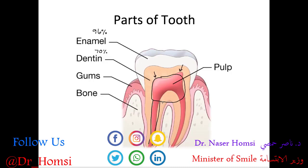Root canal treatment, however, is done when there is very deep decay or trauma that damages the root system and requires cleaning it all out — so there's a distinction between having a root canal anatomically and having root canal treatment. Next we have the gums, the pink structures surrounding a tooth, and the bone — which is slightly softer than dentin at about 65% mineral — specifically the maxilla and mandible that encase the teeth in place.